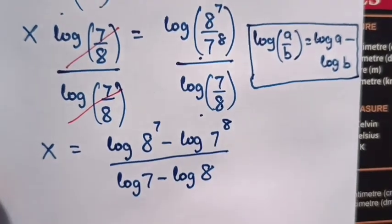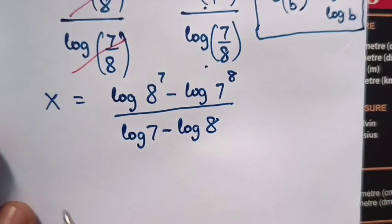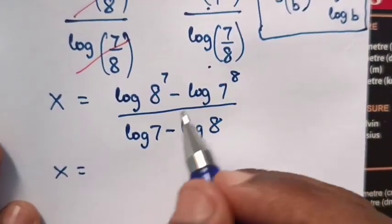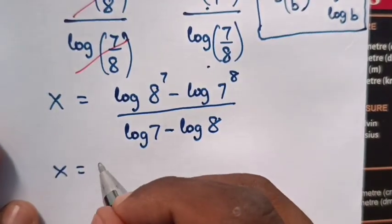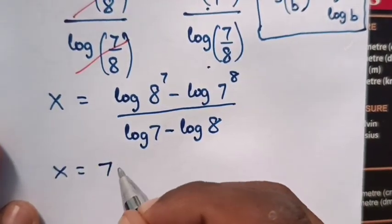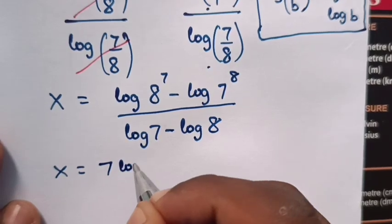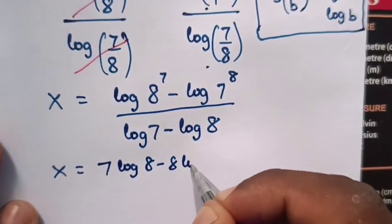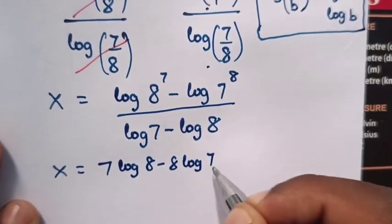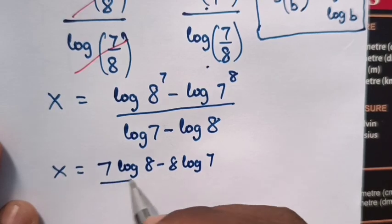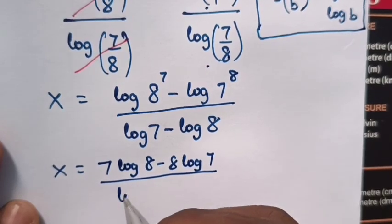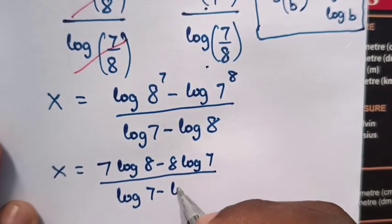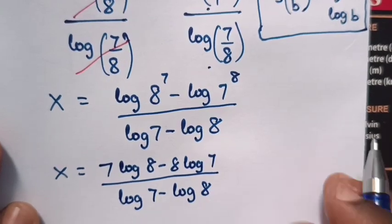Now, we apply the power logarithmic rule from here, so it will be: 7 log 8 minus 8 log 7, over log 7 minus log 8.